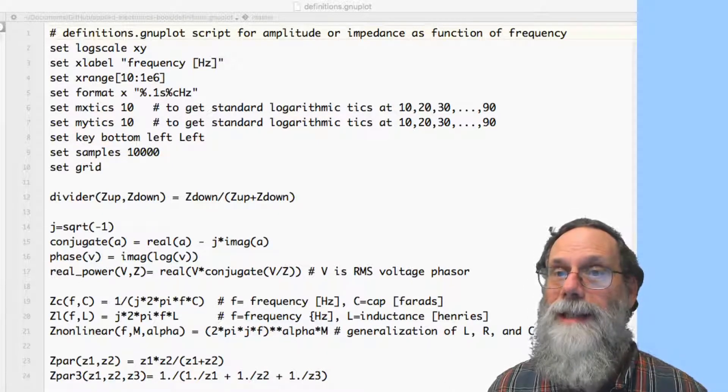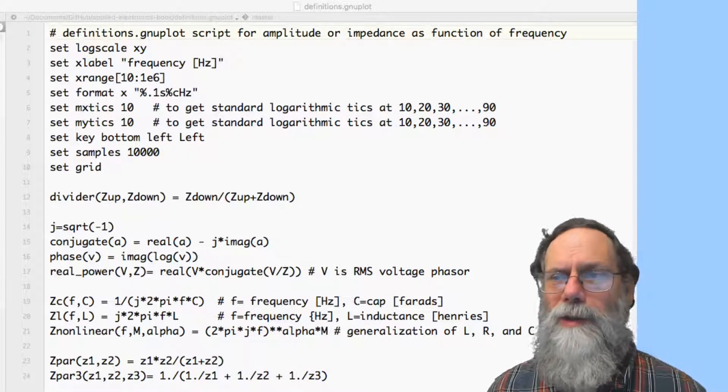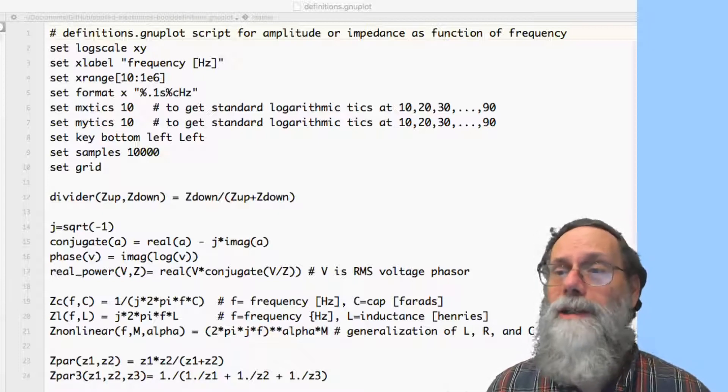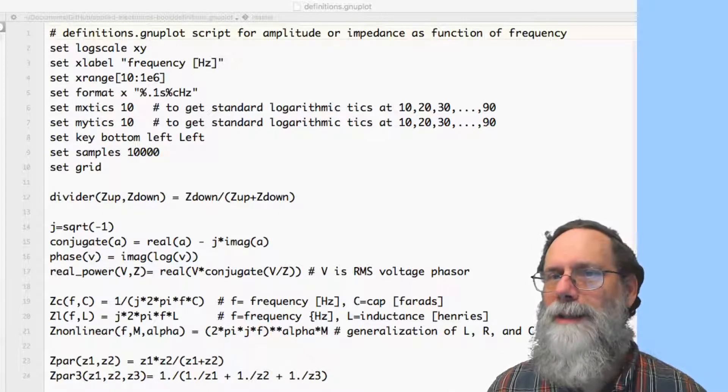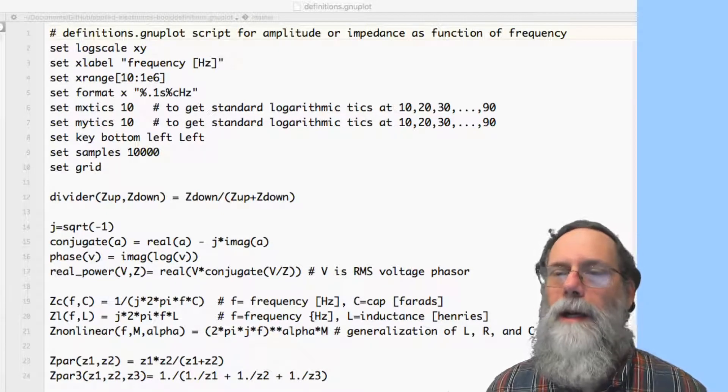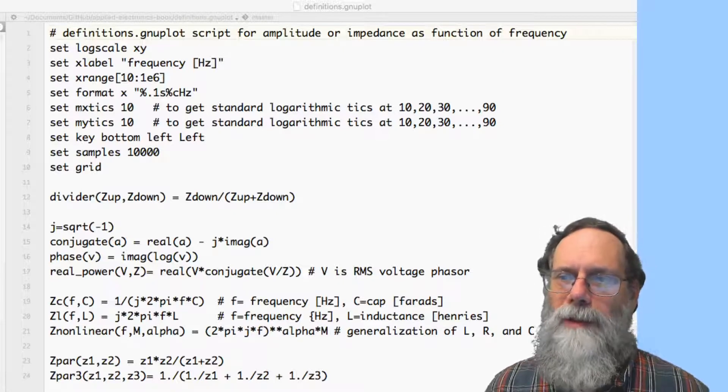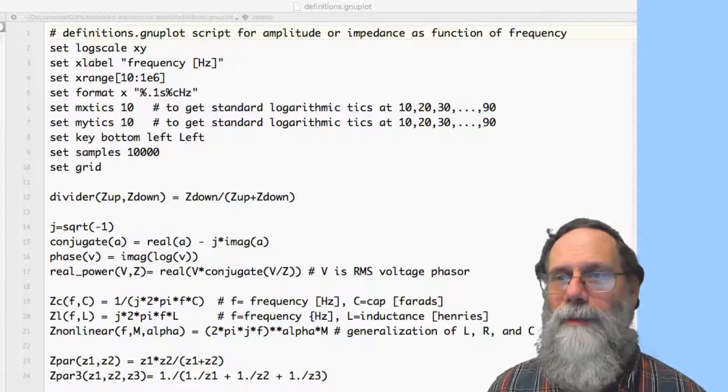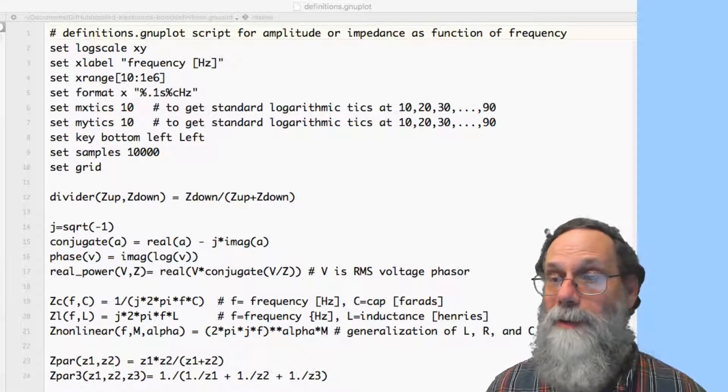The format here is what gives me the nice labeling the tick marks. Setting m x ticks to be 10 and m y ticks to be 10 gives me the standard logarithmic ticks at 10, 20, 30, up to 90. You do want to do this because you don't want to have ones that are at 2, 4, 8, or 2, 4, 6, 8. Nobody will understand what the hell they mean. So if you want to do logarithmic scale, it's a good idea to always set the minor ticks to be 10 per major tick. The set key bottom left sets the key in the bottom left corner.